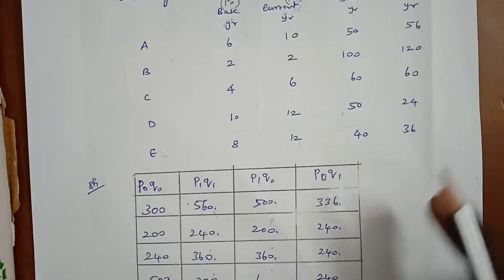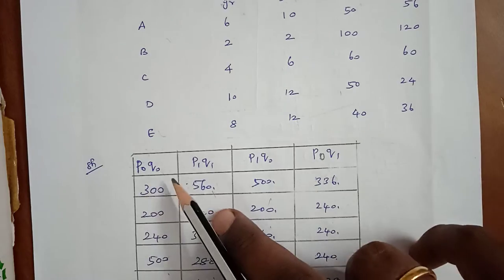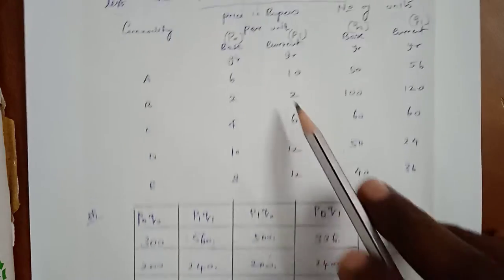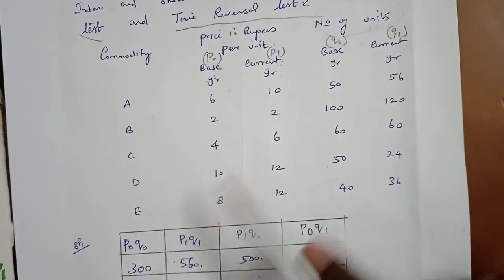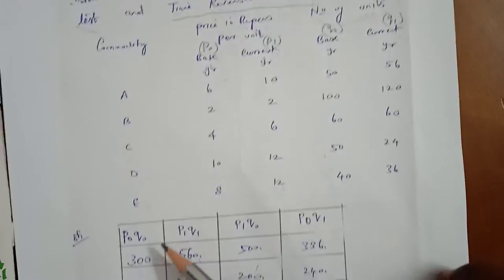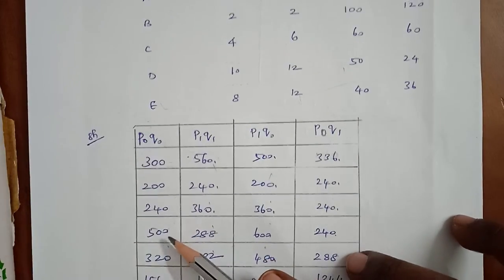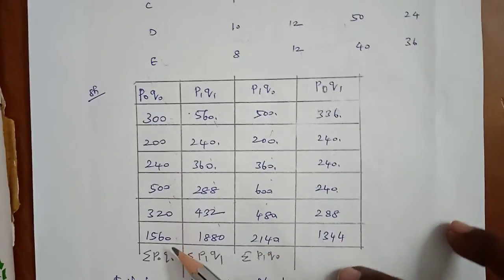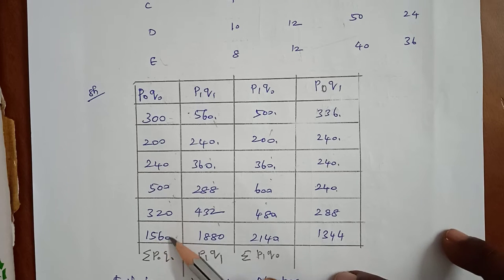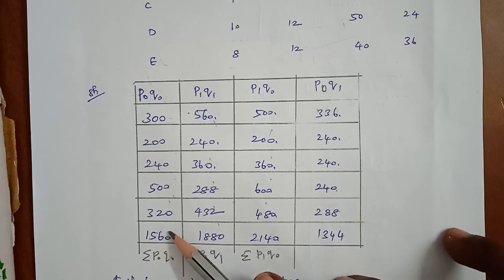First we have to calculate the Fischer's ideal index number. So multiply P0 into Q0: 6 × 50 = 300, 200, 240, 500, 320. Adding all the values, the total is sigma P0Q0 = 1560.